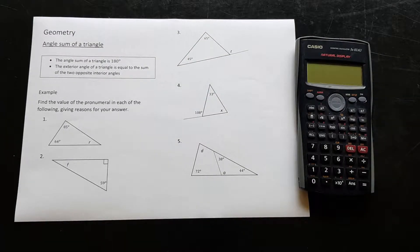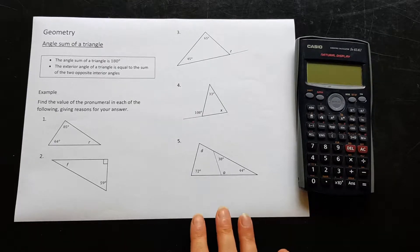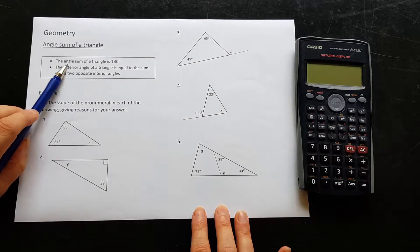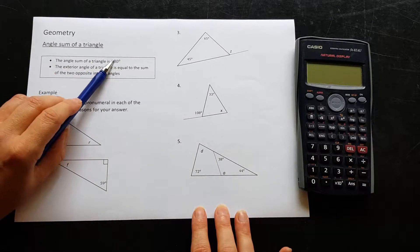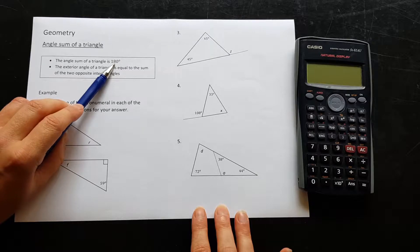Hello, this is Jo from Maths Tutor Me. Today we're doing geometry and we're going to learn about the angle sum of a triangle. Now every triangle, all triangles, have an angle sum of 180 degrees. That's the first rule we're going to use today.